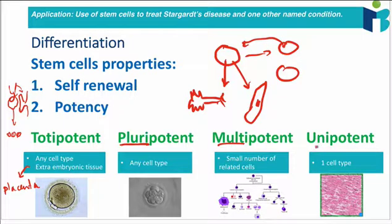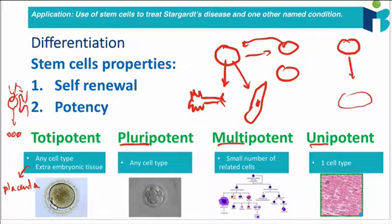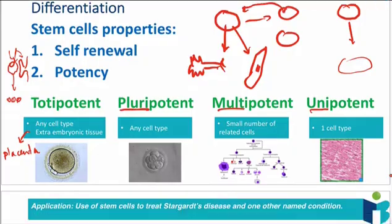And then finally, we have the unipotent stem cells. These are what we also call progenitor cells, and they can simply differentiate into one other type of cell. You find these in muscle tissue — stem cells that can form new muscle if regeneration is necessary, but they can only form one specific cell type. So those are the different things you need to know about stem cell potency.